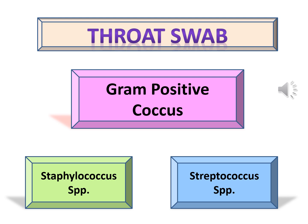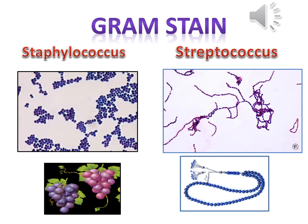Our lab today will be about the common gram-positive bacteria that may cause throat infection and go in detail how to differentiate between the species. A throat swab culture or throat culture is a test commonly used to diagnose bacterial infections in the throat. The most common gram-positive cocci bacteria are Staphylococcus species and Streptococcus species besides other bacteria. Staphylococcus species are gram-positive cocci arranged in grape-like clusters, while Streptococcus species are gram-positive cocci arranged in chains or diplococcus.